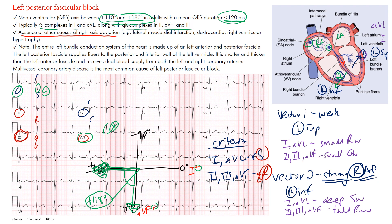The entire left bundle branch conduction system is made up of the left anterior and posterior fascicles. The posterior fascicle supplies the posterior inferior portions of the left ventricle. It is shorter and thicker than the left anterior fascicle and receives dual blood supply from both the left and right coronary arteries, making it more resilient and resistant to ischemia. That's why left anterior fascicular block is actually more common than left posterior fascicular block.